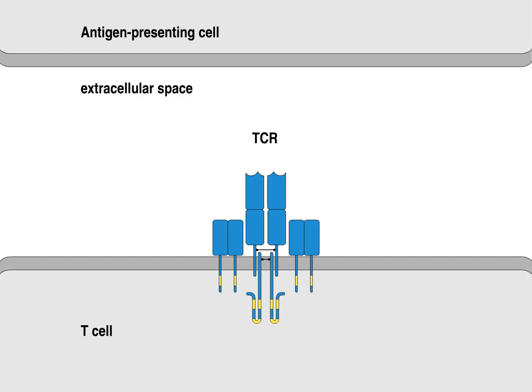The T-cell receptor is a complex of antigen-specific alpha and beta chains associated in the membrane with the CD3 gamma, delta, epsilon, and zeta chains.